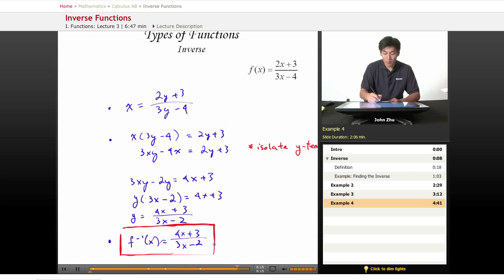And it must be symmetric with respect to y equals x line. Step 1, we swap x and y in our original function. Step 2, solve for y. And then just replace that y term with f inverse of x.